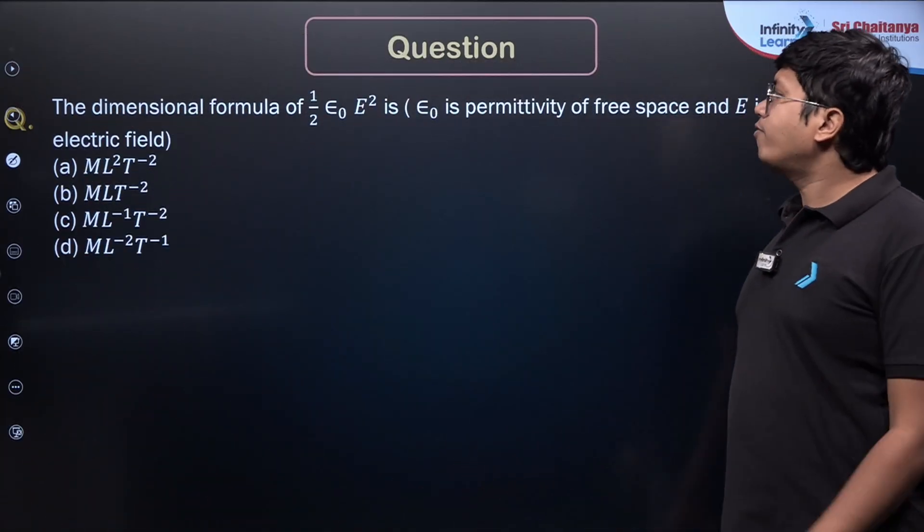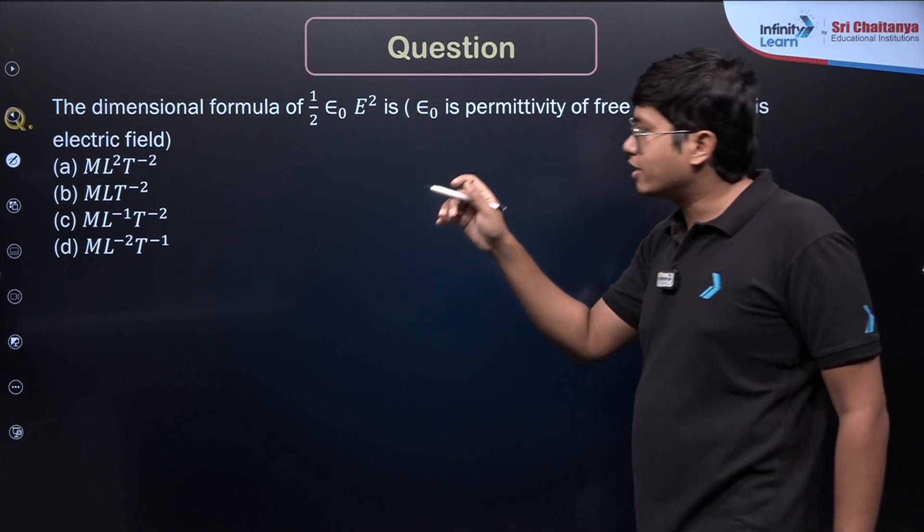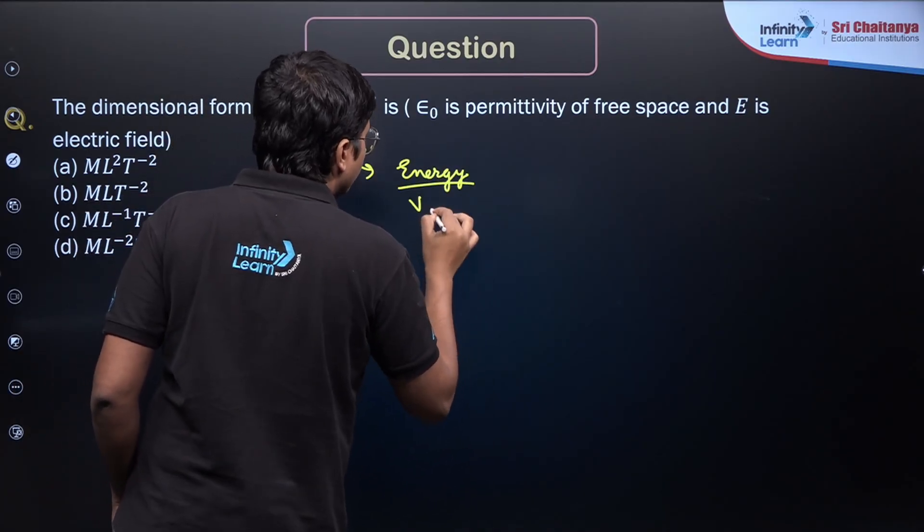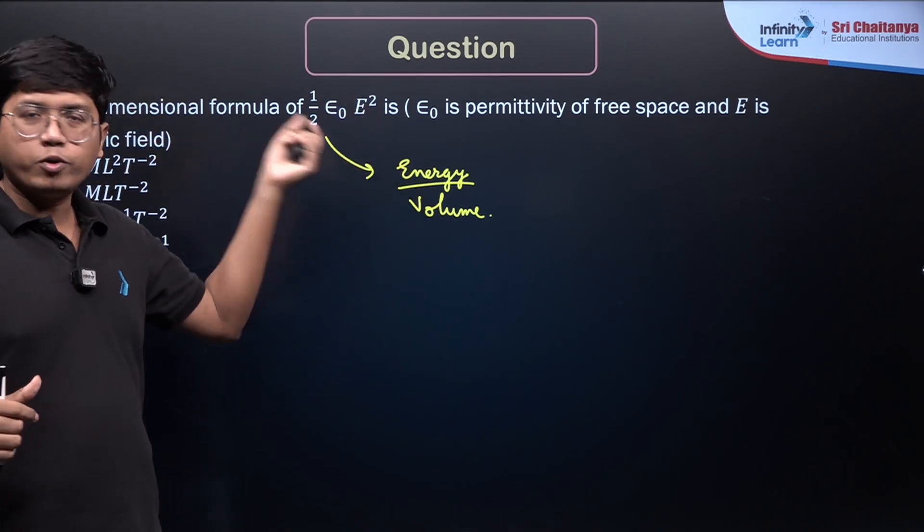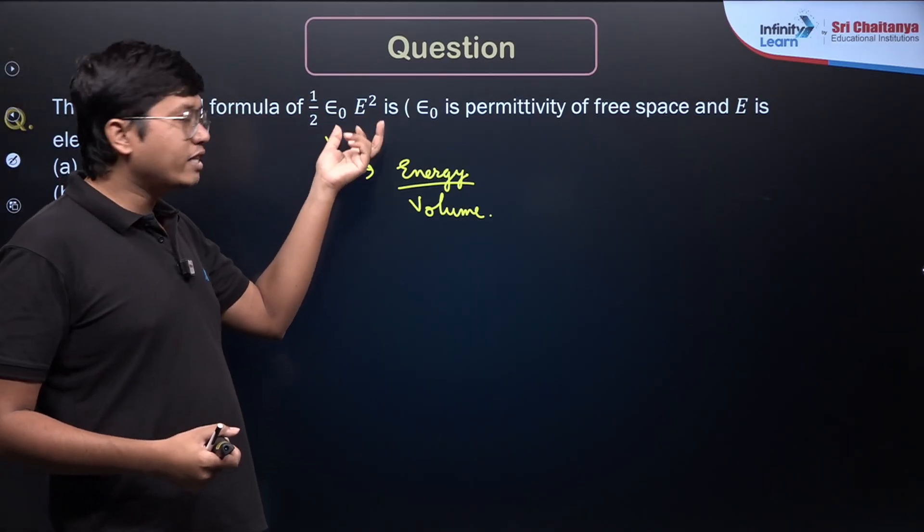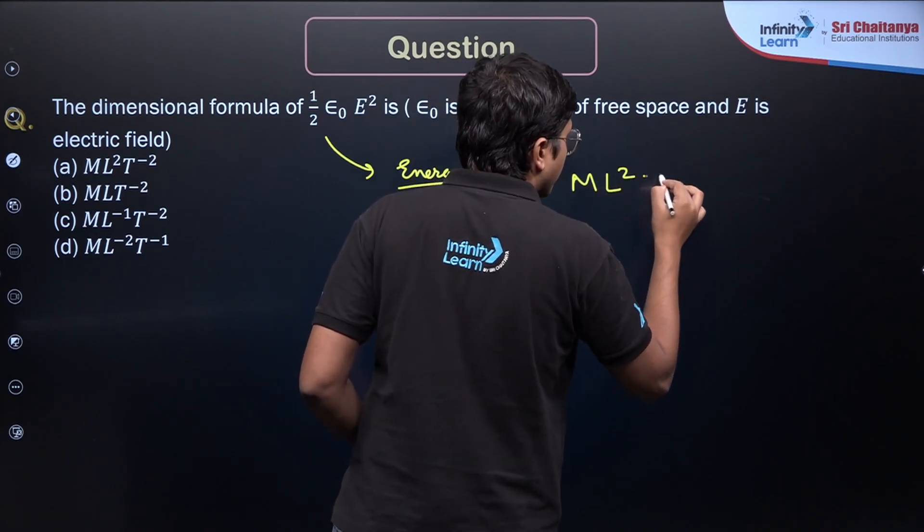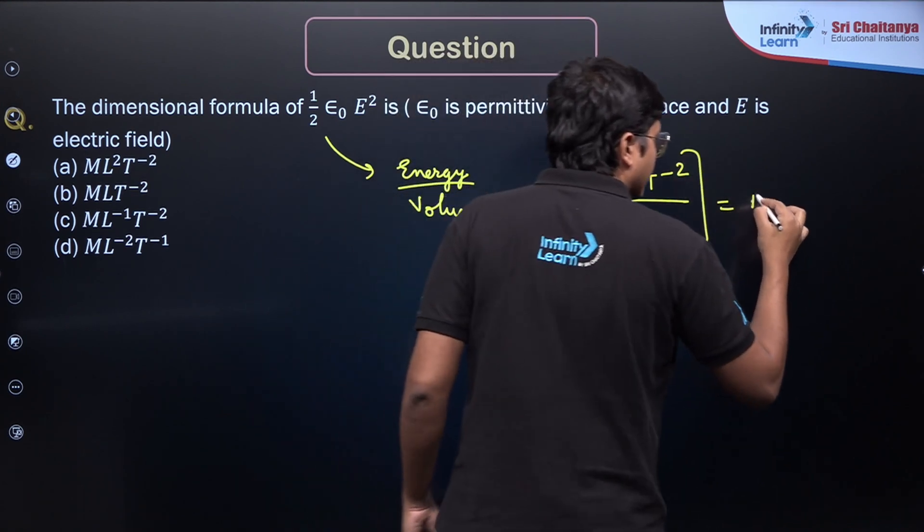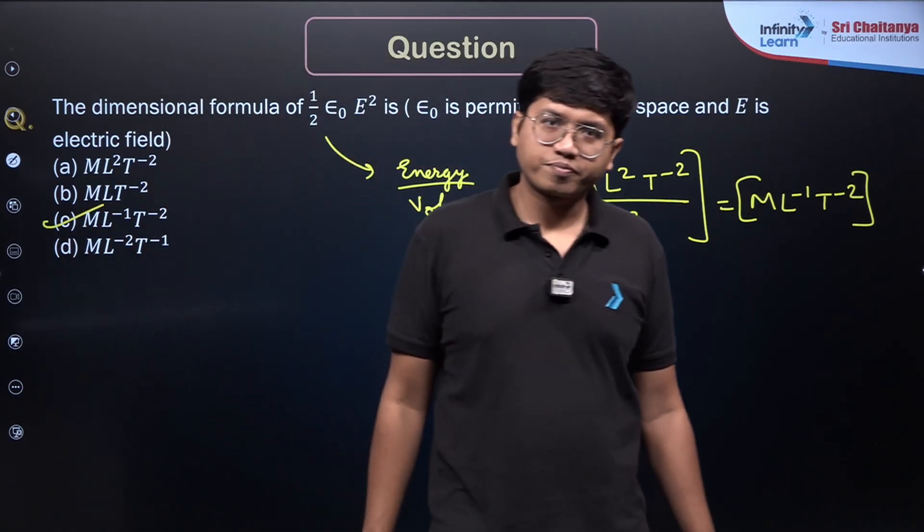Third one we go to: the dimensional formula of half epsilon naught E squared. Now you don't need to put the epsilon naught dimensions here, electric field dimensions here. You know this refers to energy per unit volume. Or if you want, you can even put epsilon naught values and the electric field dimensions and do it overall. Half will have no dimensions. Or if some of you might know that this half epsilon naught E squared talks about the energy per unit volume of an electric field. Now energy is ML squared T minus 2, has the dimensions ML squared T minus 2. Volume has a dimension of L cubed. So that makes it ML minus 1 T minus 2. So it is option C.